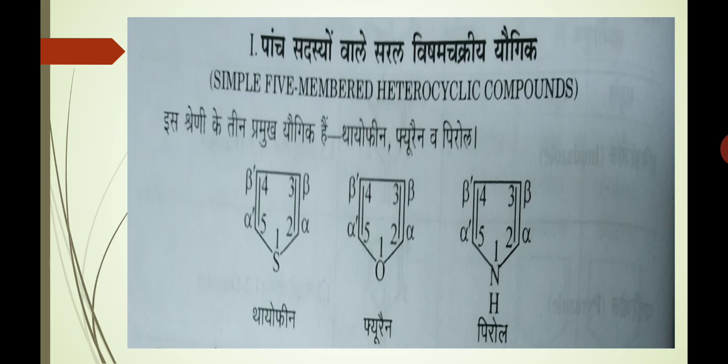Inmen jo hum numbering karte hain, vo hetero atom ko number 1 dete hain. Uske 2 wali position jo hai, usko hum alpha bolenge, aur jo 5 number par aayegi usko hum alpha-dash bolenge. Isi prakar jo numbering mein 3rd number par position hai usko hum beta bolenge, aur 4th number wali position ko beta-dash bolte hain.